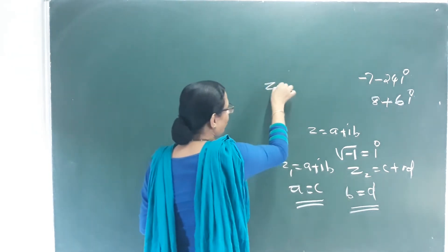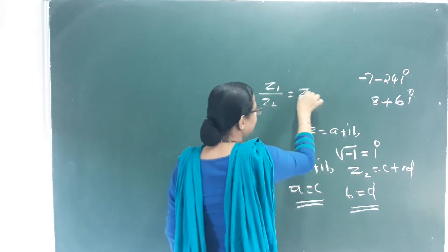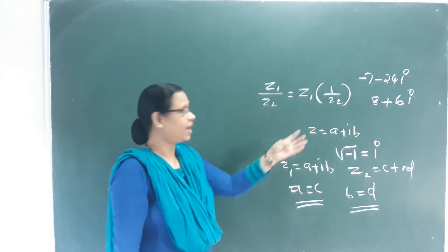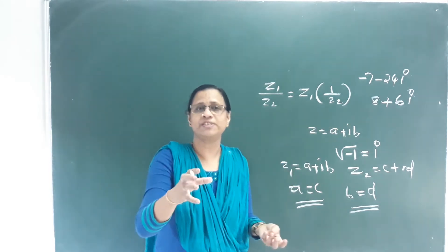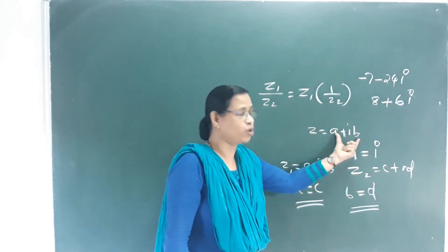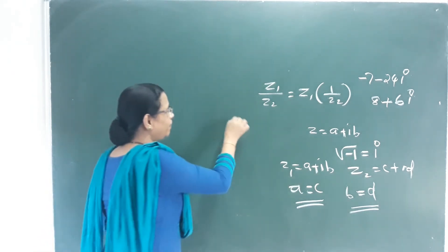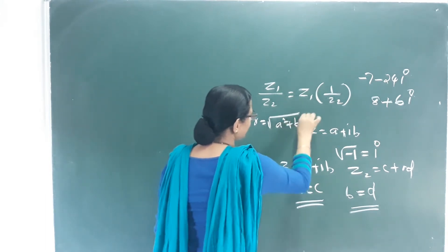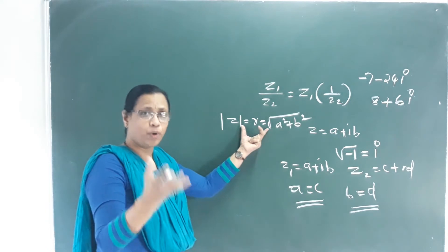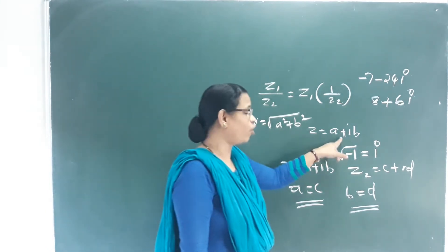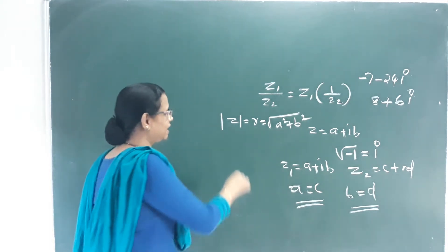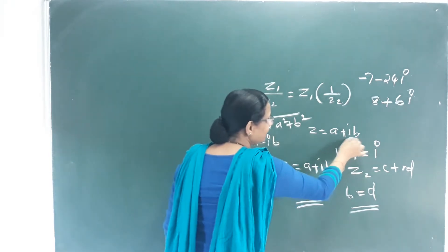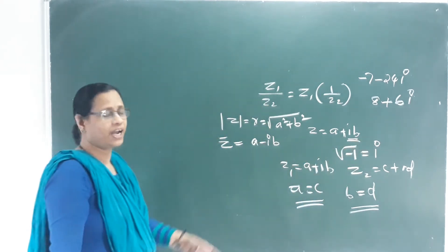How do we divide complex numbers? Division is Z₁ multiplied by 1/Z₂ — we multiply by the reciprocal. In this complex number, we take the conjugate. The modulus is Z-bar = r = √(A² + B²). The conjugate of a complex number is used in division.